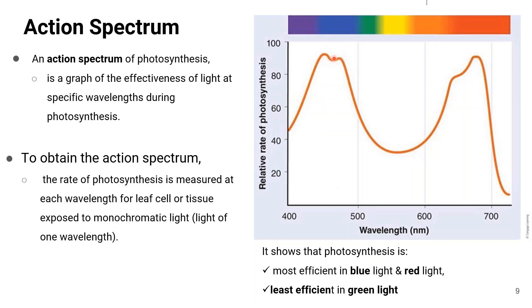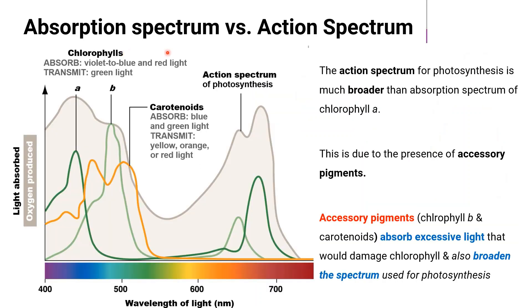Based on this, photosynthesis is most efficient in blue light and red light because the rate of photosynthesis is higher, while it is least efficient in green light where the photosynthesis rate is clearly lower. Thus, when the absorption spectrum is compared with the action spectrum —